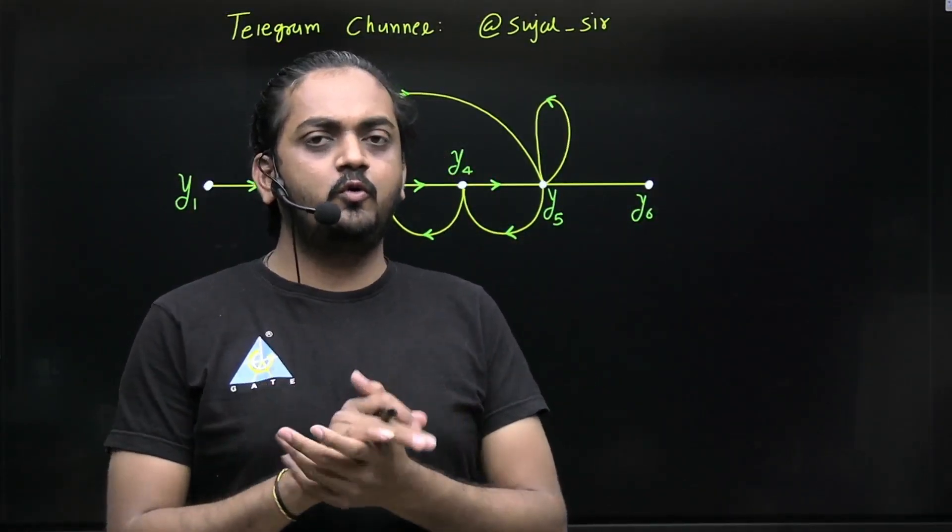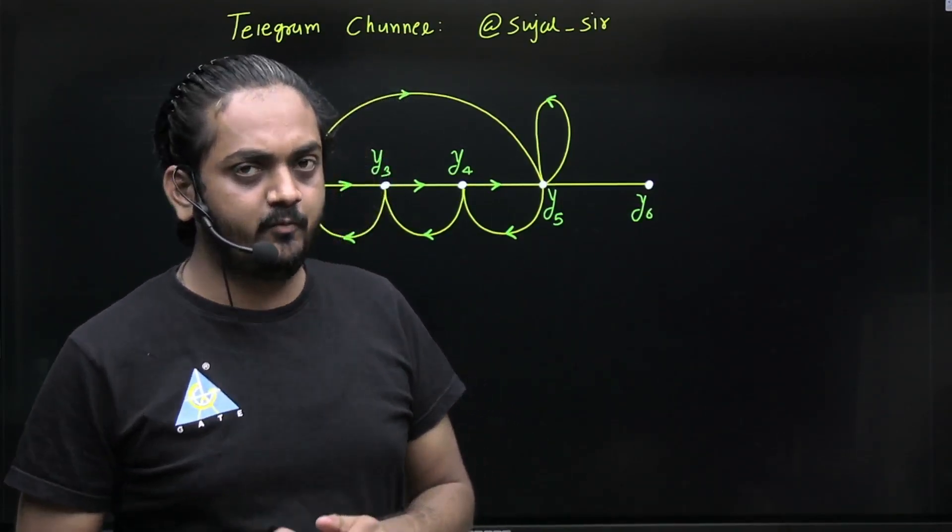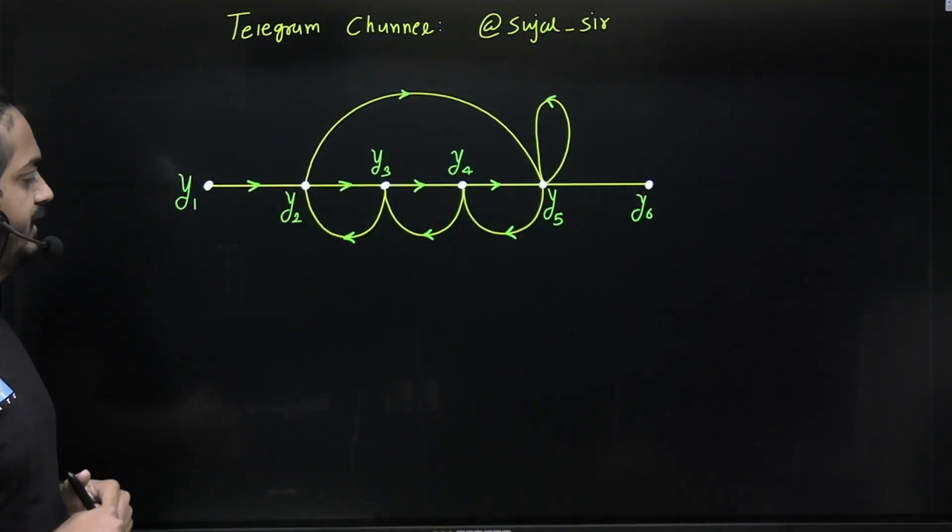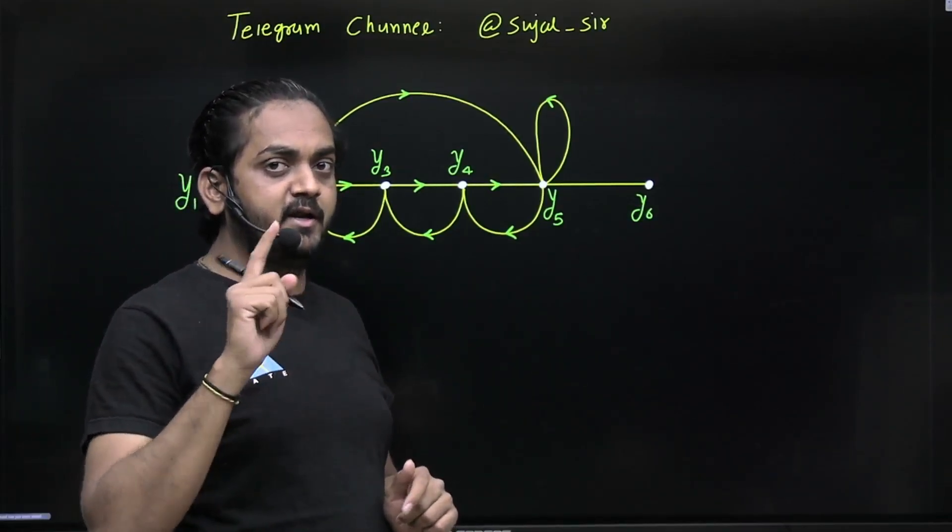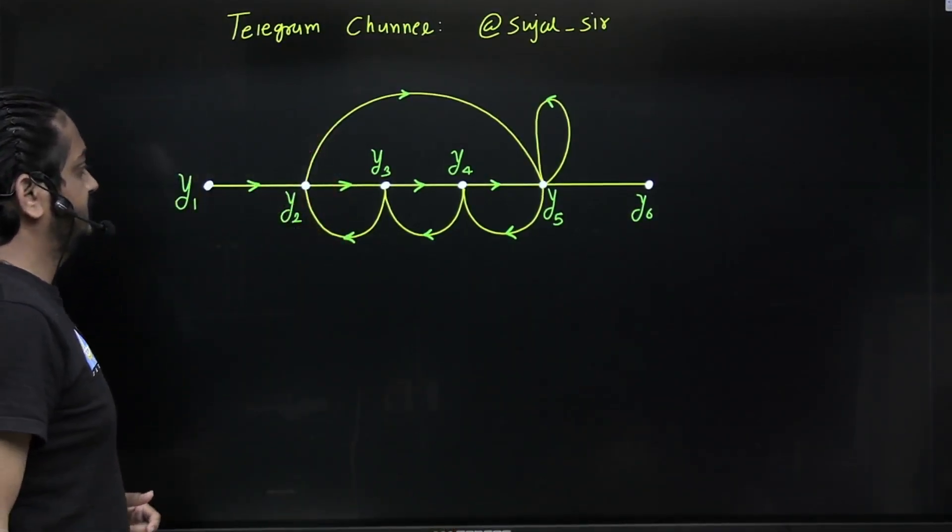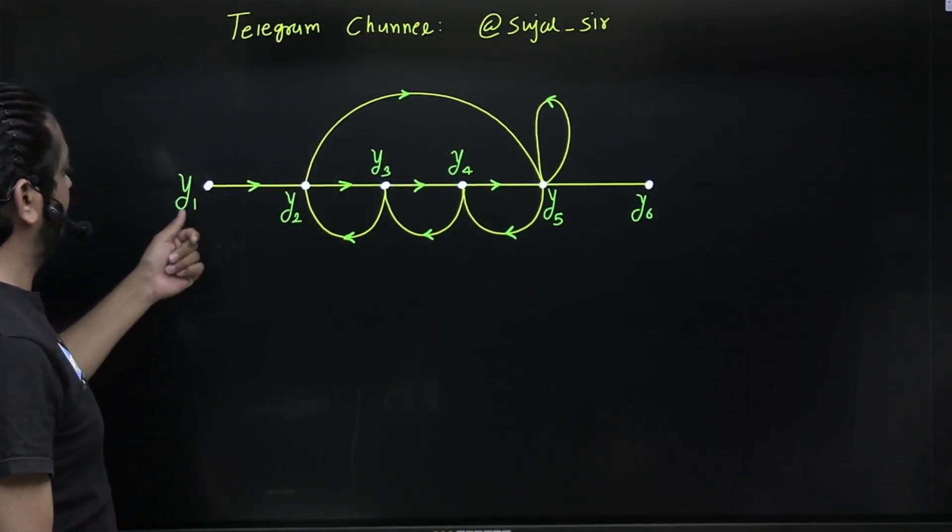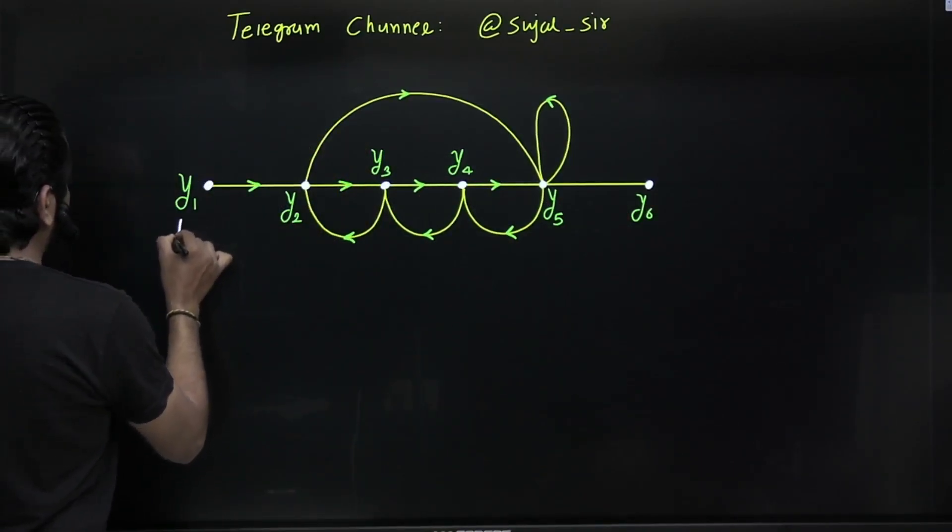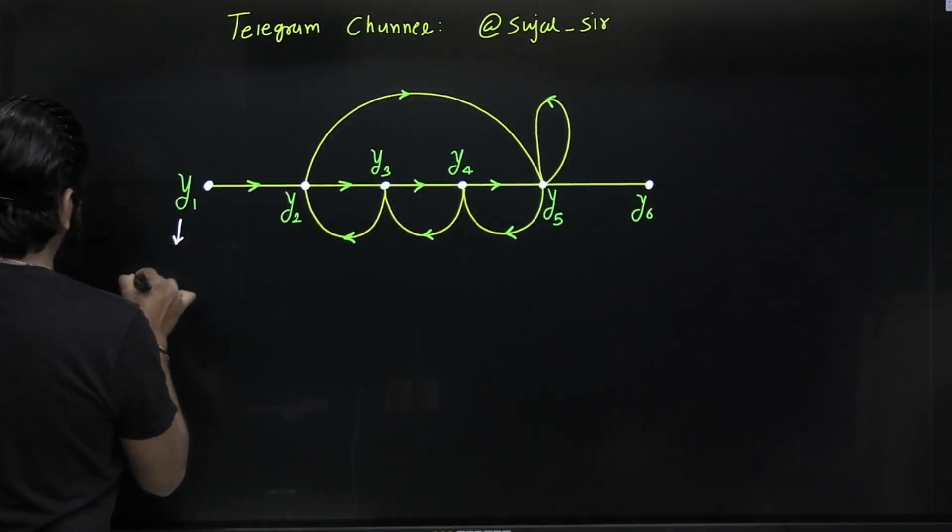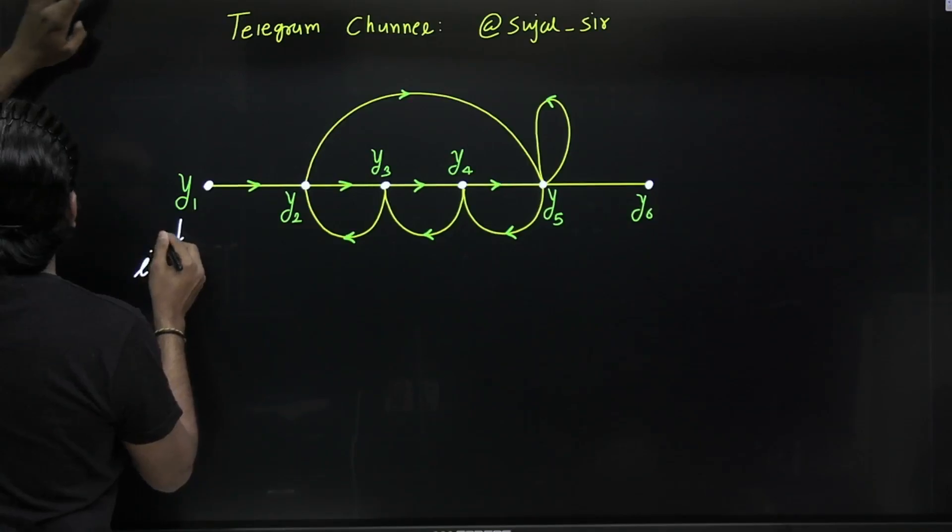Hello dear students, do you know what is the limitation of message gain formula? Message gain formula gives ratio between two nodes with respect to input node only, directly. Let us consider this SFG in which y1, y2, y3, y4, y5, and y6 are the nodes, where y1 is your input node.